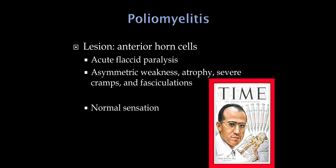The presentation of polio is asymmetrical weakness and atrophy. Anytime you have a problem with anterior horn cells, there tend to be a lot of cramps, and fasciculations are classic for anterior horn cell disease. Because this only affects the motor neurons, patients have normal sensation.